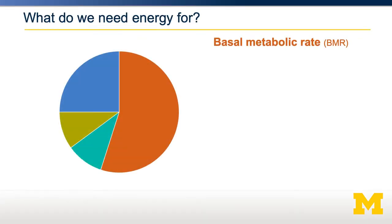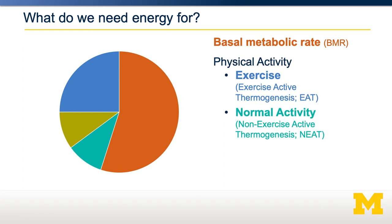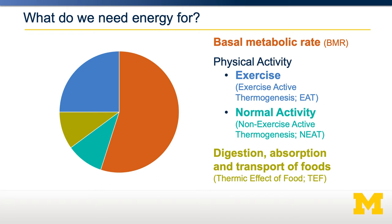So what do we need this energy for? The majority of our energy is actually used by our basal metabolic rate — normal processes like your breathing or your heart beating. These have to happen no matter what, and they consume a lot of energy. The second component is physical activity, broken down into exercise and your normal daily activity, such as walking around your apartment. The fourth component is the thermic effect of food — the energy it takes to digest, absorb, and transport our food.